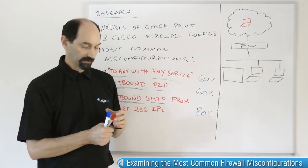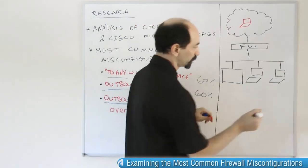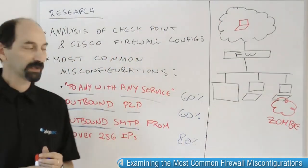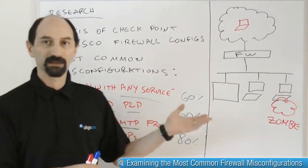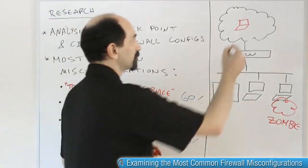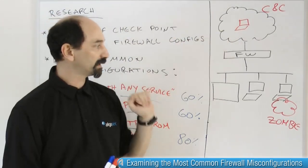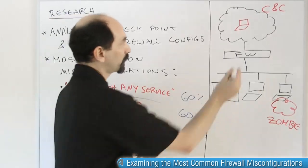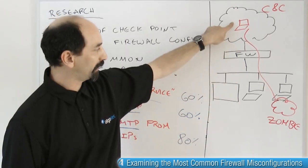Think about a case where one of your internal computers gets infected by some malware and is now a zombie. It's running malware that is doing malicious tasks — maybe participating in denial-of-service attacks, maybe sending spam email, maybe leaking out information or harvesting credit card numbers. That zombie is owned by some command and control center out on the internet. The command and control center needs to control the zombie and send it commands telling it what to do. You would think this traffic from the command and control center to the zombie would be inbound traffic from the firewall's point of view.